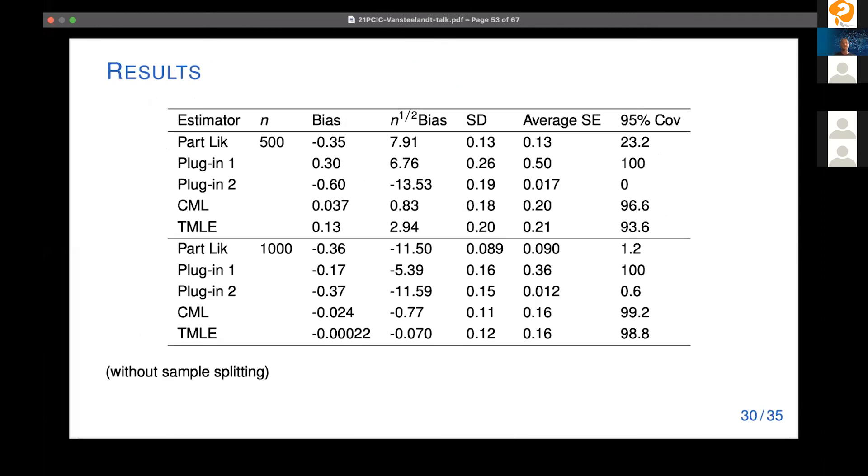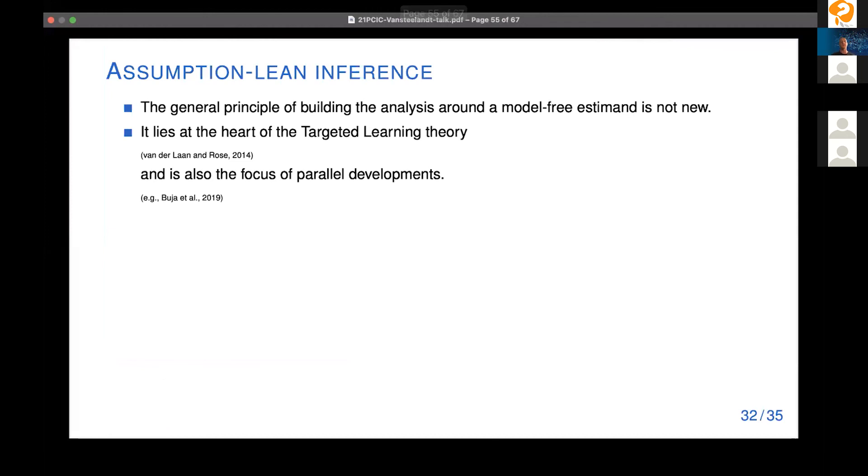And here is some results at sample size 500 and a thousand. Here I look at partial likelihood estimators from a Cox model that has like main effects of the covariates but is misspecified and so you can see that we get poor coverage as a result that basically goes to zero. The plugin estimators again we get a difficult time at accommodating the uncertainty in the machine learning predictions. And for the proposal we again see smaller bias and reasonably good approximations of the standard error. So we were generally quite happy because this is a setting where we are not using sample splitting which ideally is needed in these machine learning approaches.